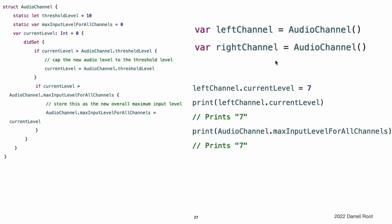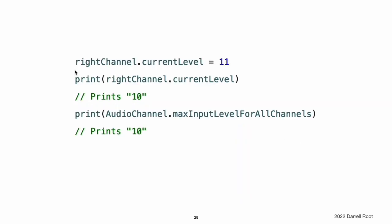You can use the AudioChannel structure to create two new audio channels called leftChannel and rightChannel to represent the audio levels of a stereo sound system. If you set the current level of the left channel to 7, you can see that the maxInputLevelForAllChannels type property is updated to equal 7. If you try to set the current level of the right channel to 11, you can see that the right channel's currentLevel property is capped to the maximum level of 10, and the maxInputLevelForAllChannels type property is updated to equal 10.